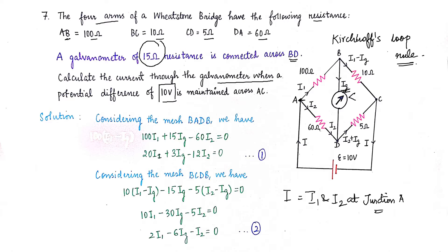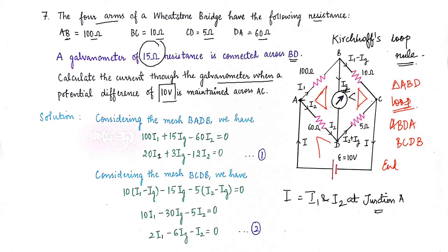The first loop we consider is triangle ABD — written as closed loop ABDA. The second loop is triangle BCD — written as closed loop BCDB. The third loop includes the voltage source, connected through the outer path, which we will also consider.